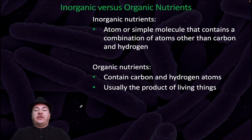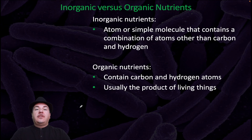Inorganic nutrients are atoms or simple molecules that contain a combination of atoms other than carbon or hydrogen. For example, carbon dioxide would be an inorganic nutrient. Organic nutrients contain carbon and hydrogen atoms and are usually the product of living things. For example, glucose would be an organic nutrient.